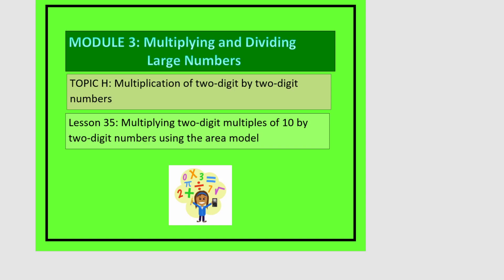This is lesson 35 in module 3. In this lesson we'll be multiplying two-digit multiples of 10 by two-digit numbers using the area model.